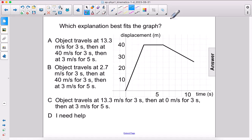So rise is 40, run to get to that point would be three seconds. So that's gonna be 13.3 meters per second for three seconds. So that answer has that, this answer also has that.